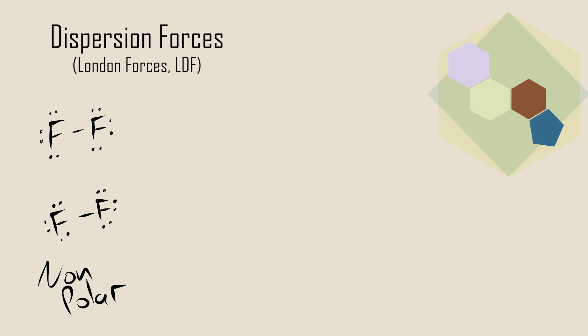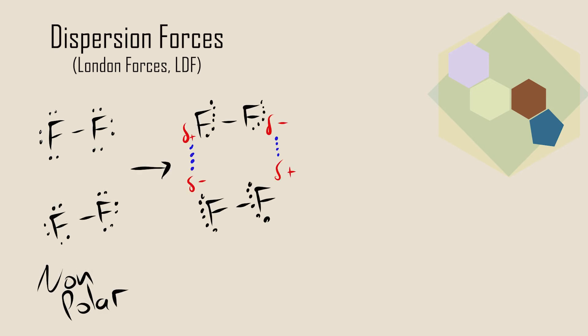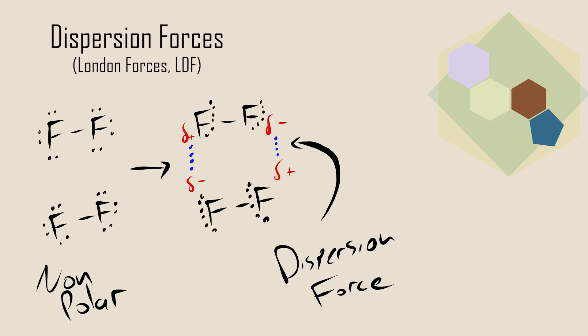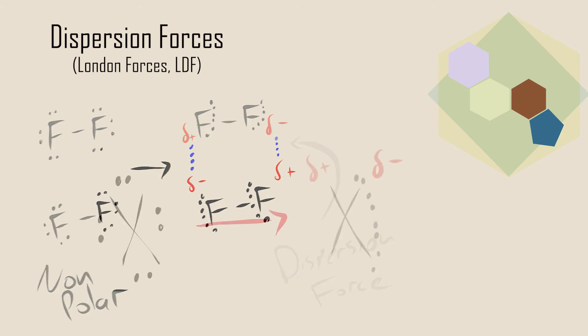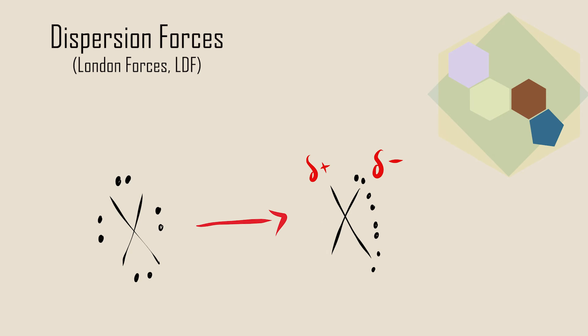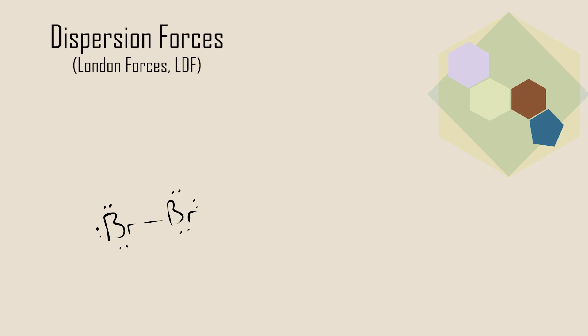The attraction between molecules that results from these induced dipoles is called dispersion forces. Dispersion forces exist in almost all types of molecules. Our focus will be on how dispersion forces affect nonpolar molecules or molecules without a permanent dipole. Dispersion forces are caused by the momentary distortion of electrons and are therefore present in all atoms, ions, and molecules. Picture a molecule of bromine. Averaged over time, the electrons are distributed evenly around the atoms, so the molecule is nonpolar.